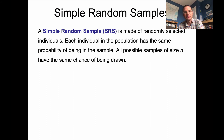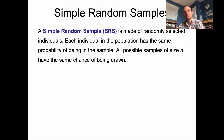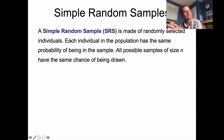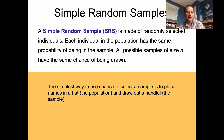What's called a simple random sample, or SRS, is made of randomly selected individuals where each individual in the population has the same probability of being in the sample. What that means is that all possible samples of size N have the same chance of being drawn. This gets rid of the bias of being more likely to study certain groups or individuals in the population over others.